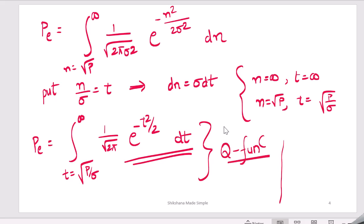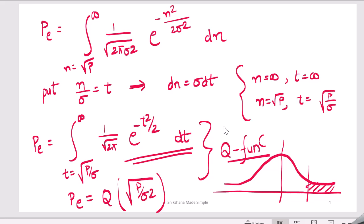The Q function, if you take the Gaussian distribution, this represents the tail of a Gaussian. So this can be written in terms of a Q function which is Q of square root of P by sigma square.